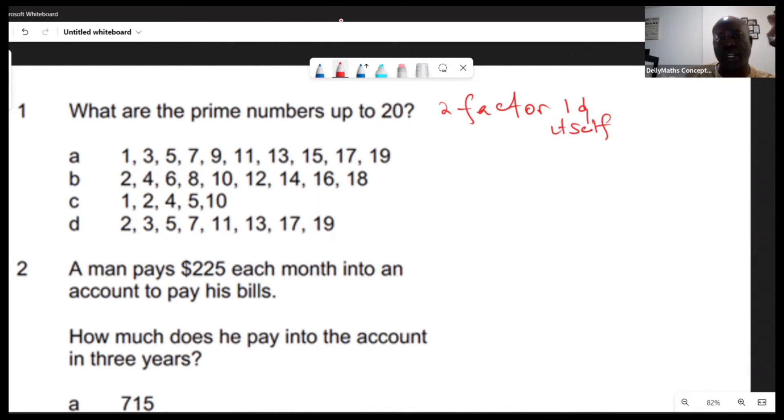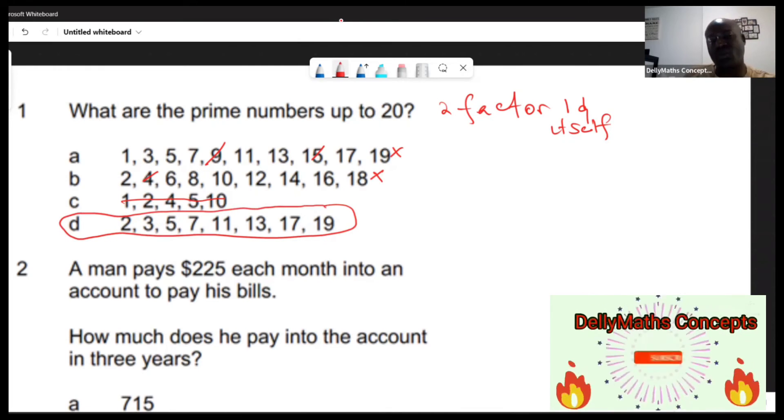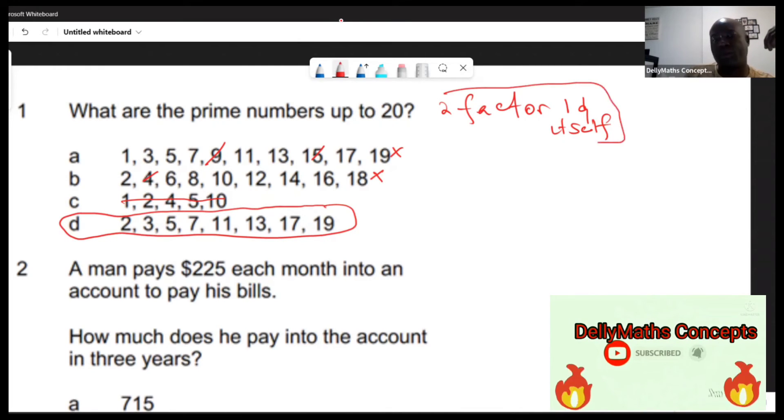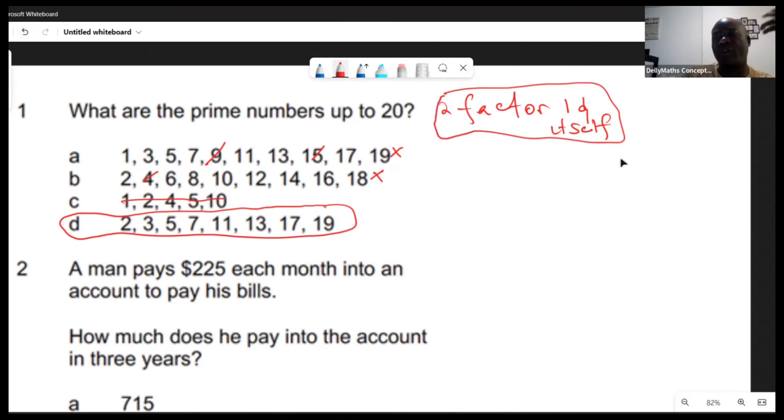We want to make sure that the numbers we're picking are prime. This set is not prime, along with other numbers - not a set of prime. These numbers down here, though, all of these numbers only have two factors: one and themselves. So the first one is D. It's about understanding what a prime number is - only having two factors, one and itself.